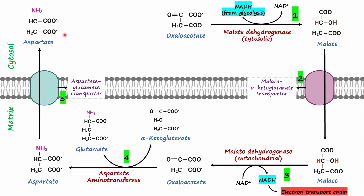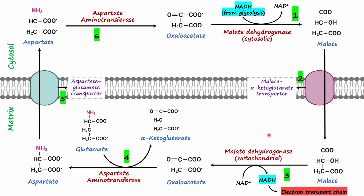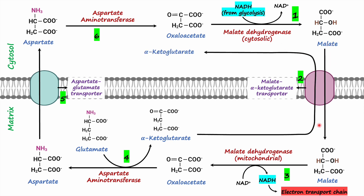Once inside the cytosol, aspartate is then transaminated to synthesize oxaloacetate, regenerating oxaloacetate in the cytosol. The reaction is catalyzed by aspartate aminotransferase enzyme present in the cytosol. Alpha-ketoglutarate synthesized in the mitochondria is then transported from the mitochondria into the cytosol in exchange for malate through the malate–alpha-ketoglutarate transporter. This is an antiporter — a protein which allows transport of two molecules at the same time but in different directions. So malate is transported from the cytosol to the mitochondria, whereas alpha-ketoglutarate is transported from the mitochondria into the cytosol.